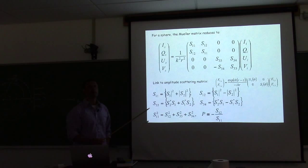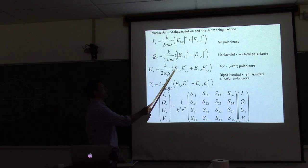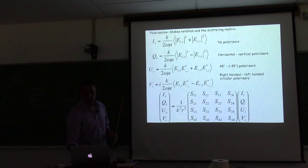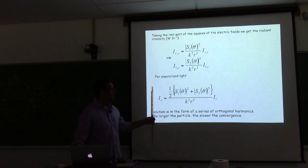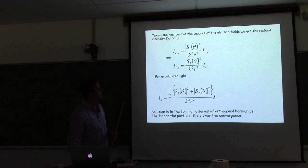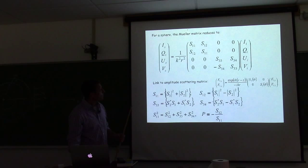Question from a student: going back to the Mueller matrix, you have equations between the intensity components, expressed in terms of S1 and S2 — are those the same S's? Answer: Good point — these elements are not the same as the big S1, big S2. The thing to remember is that everything here is still angular dependent.